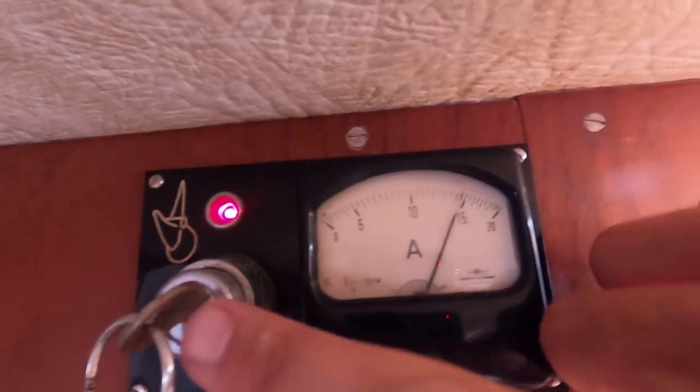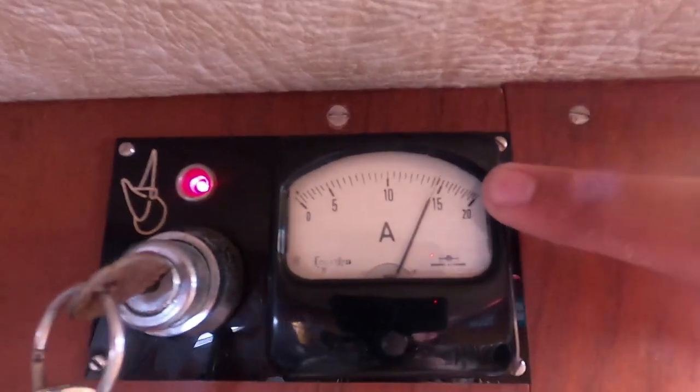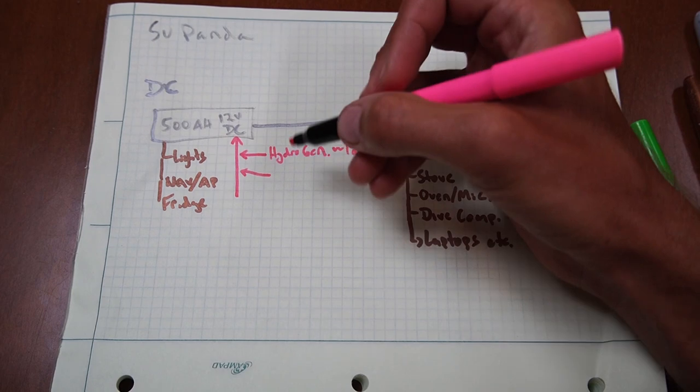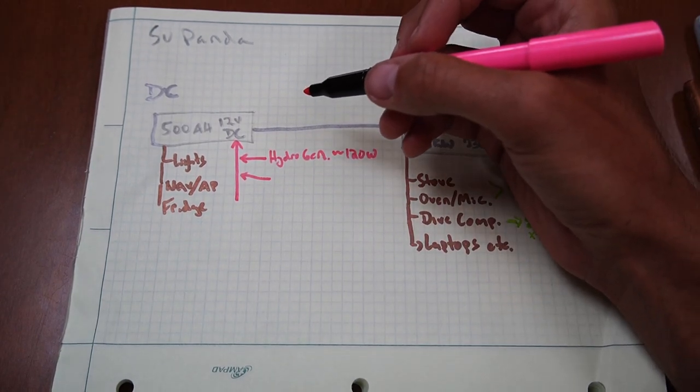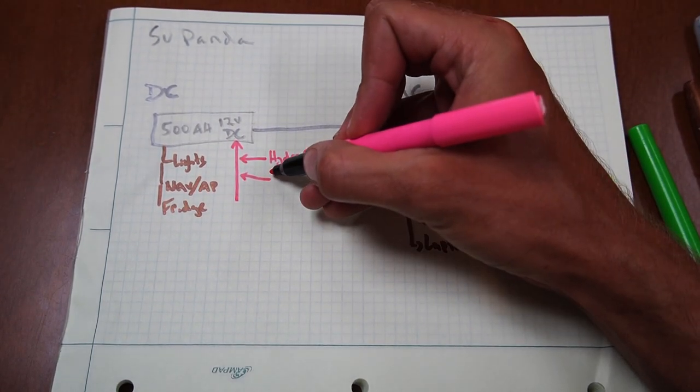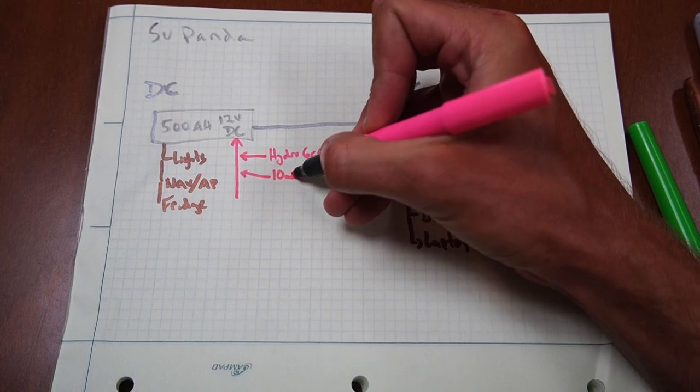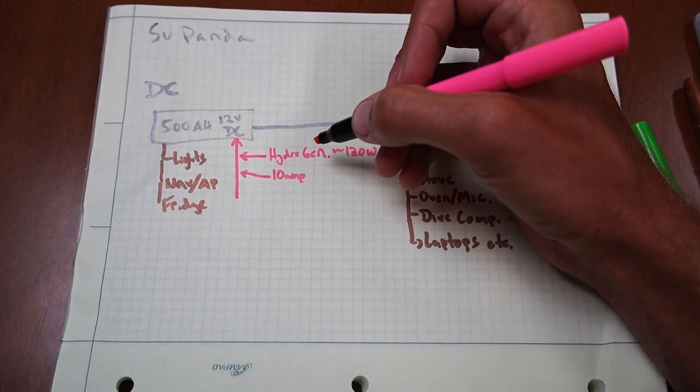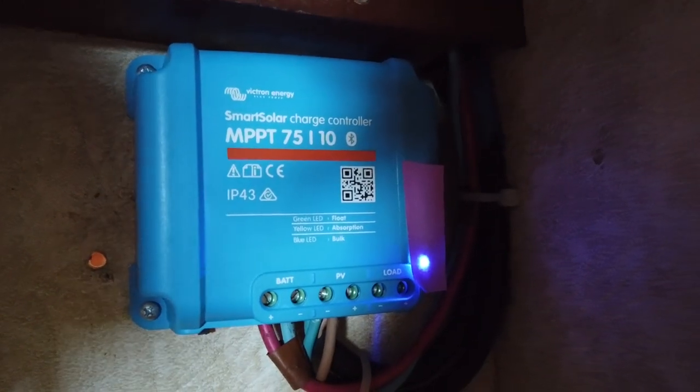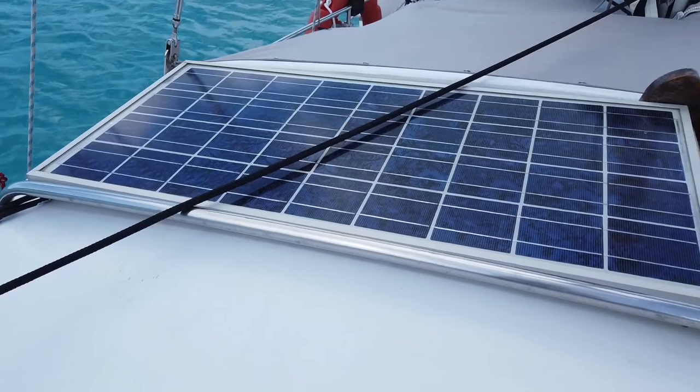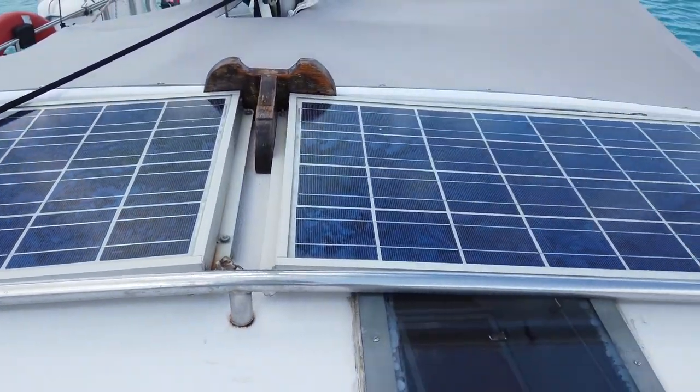Next, we have two solar arrays. And our smaller one is a 10 amp controller. And we generate about 400 watt hours average a day.